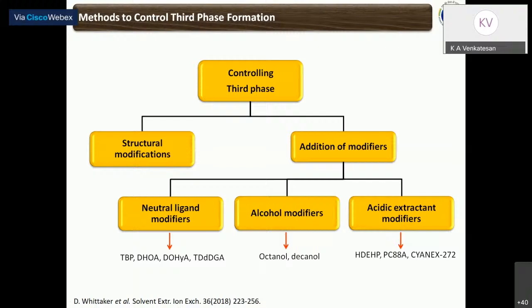To control third phase formation, several approaches are available. One can do structural modification of the extractant itself to prevent third phase formation. Alternatively, one can add phase modifiers. In literature, three kinds of modifiers have been reported: neutral ligand modifiers, alcohol-based modifiers, and acidic extractant-based modifiers. Among neutral ligand modifiers, two categories exist: PUREX extractants such as TBP and DHOA, which were proposed as phase modifiers when third phase formation was observed in CMPO-based systems in the 1980s.